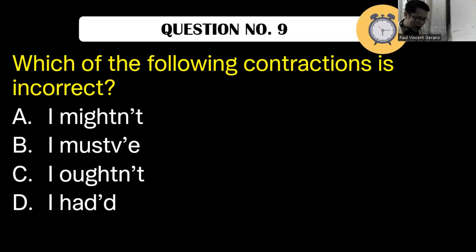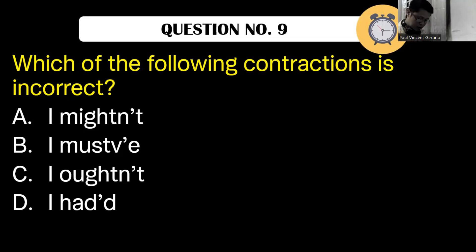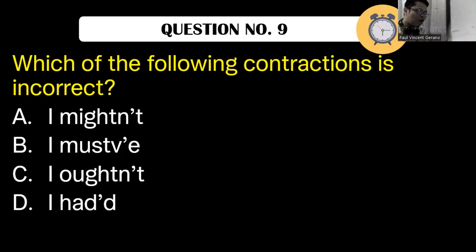A contraction is when you join two words together. For example, 'I don't' — the long form is 'I do not.' 'I won't' — 'I will not.' You have two words and you join them together. That is a contraction. You do not use contractions in formal English, because contractions make your language informal.